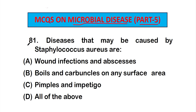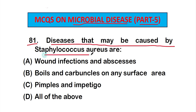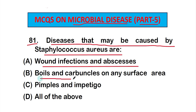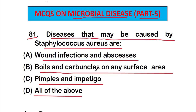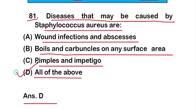Question number 81: Diseases that may be caused by Staphylococcus aureus. Option A: wound infection and abscesses. Option B: boils and carbuncles on any surface areas. Option C: pimples and impetigo. Option D: all of them. The answer is option D — all of the above conditions are caused by Staphylococcus aureus.